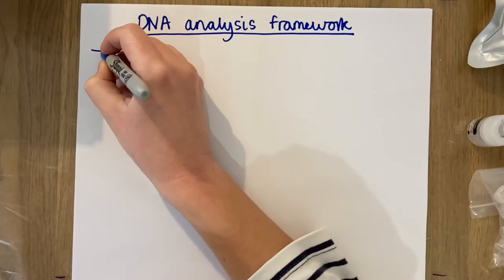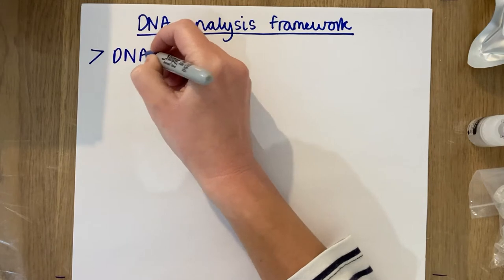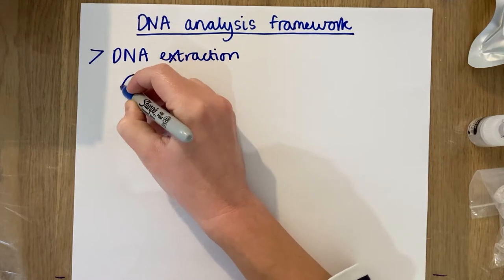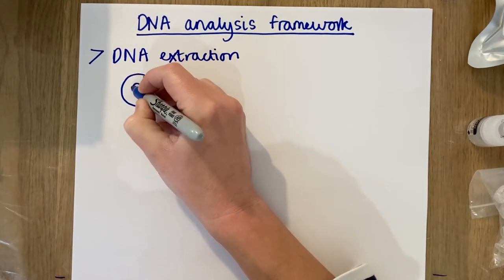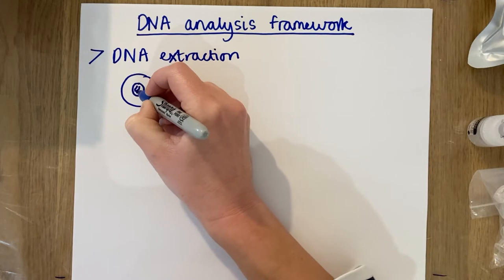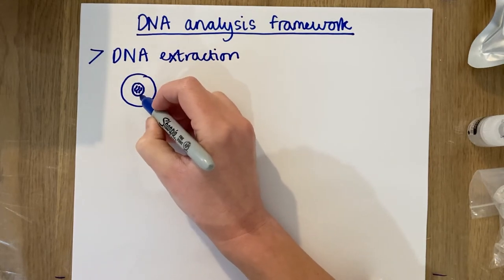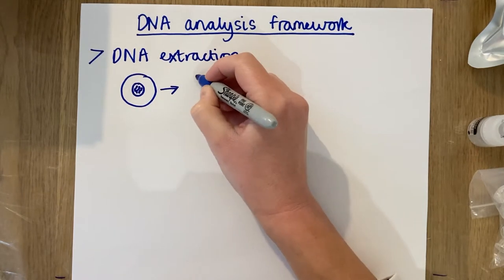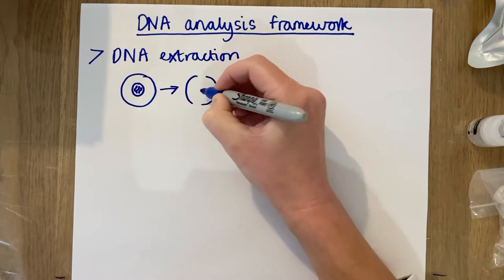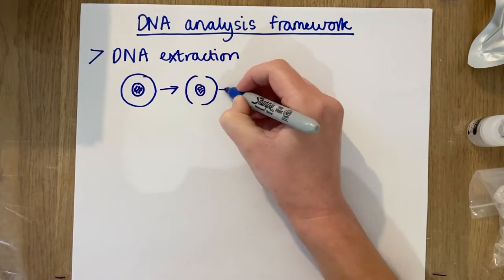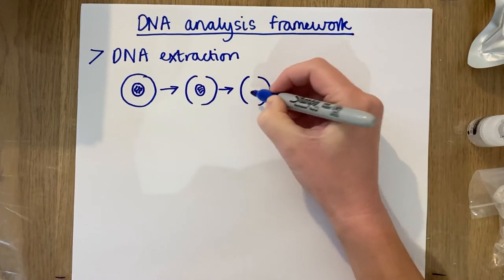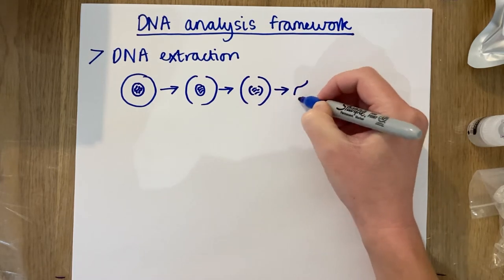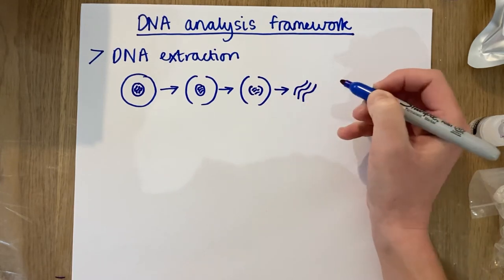The first step in the DNA analysis framework is DNA extraction, and this involves removing the DNA from the cell membrane and the nuclear membrane that contains DNA. For bacteria, they don't even have a nuclear membrane so that step doesn't apply. First of all you want to break open the cell membrane to release the cell contents, and then you want to break open the nuclear membrane to release your DNA, and then once that DNA is free it's accessible for DNA analysis.